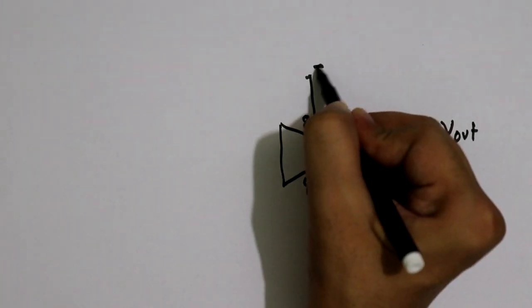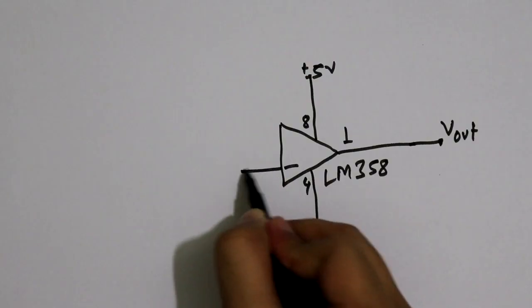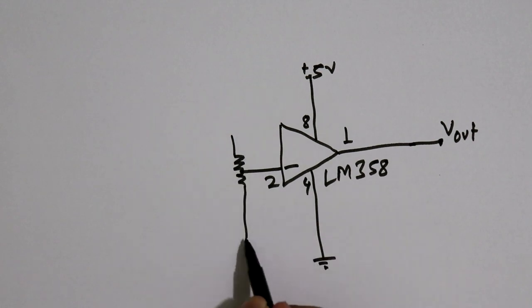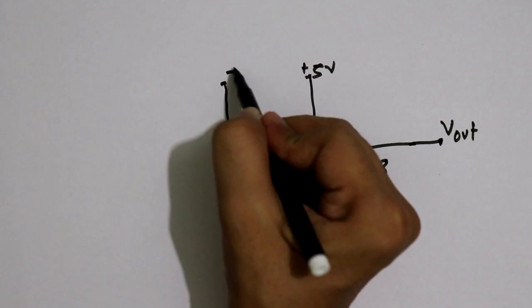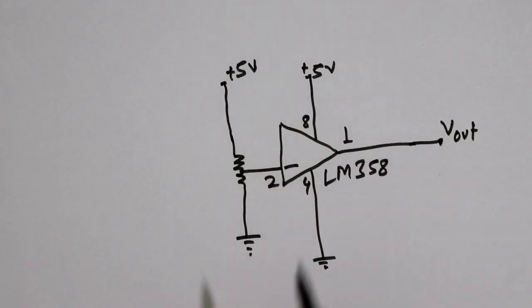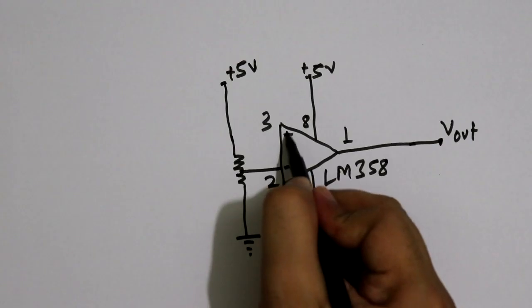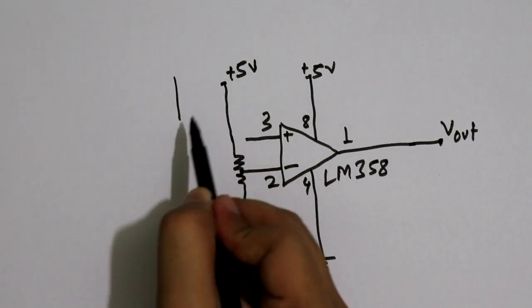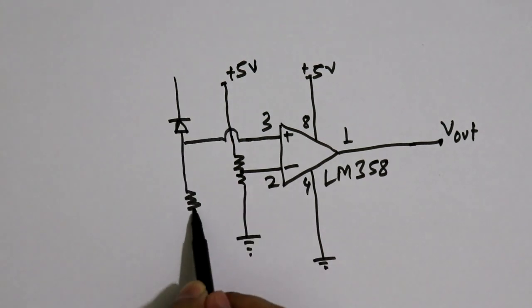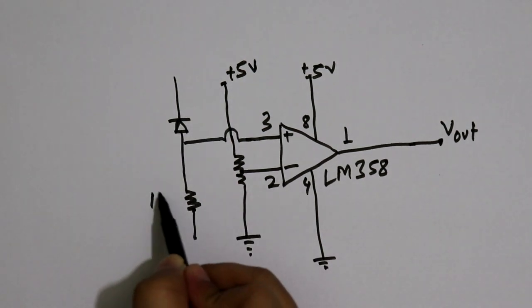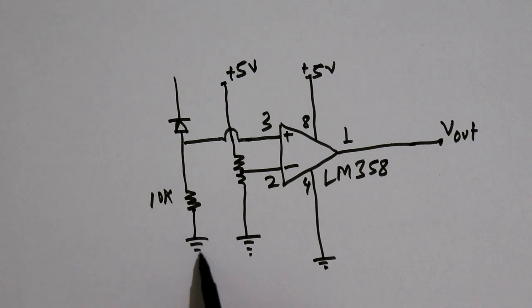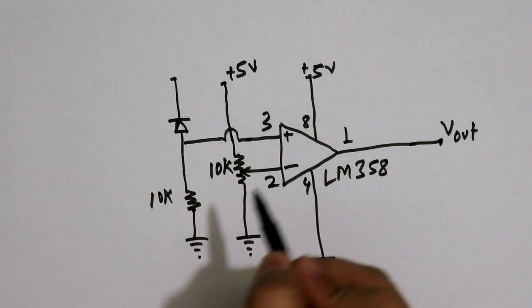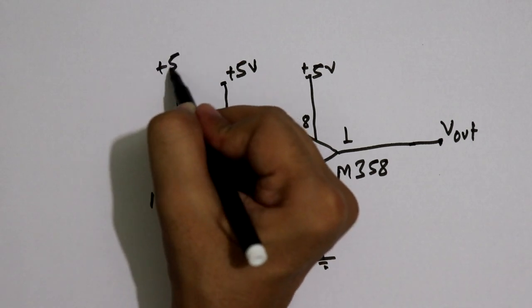Pin number 2 is connected to a potentiometer, the middle pin of it, and this pin will go to the ground. This one is connected to plus 5 volt. It is the non-inverting pin and it is connected to the photodiode, connecting through a 10 kilohm resistor, and then it is connected to the ground.